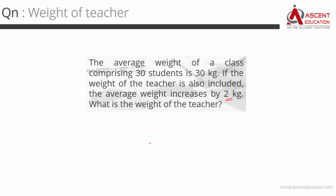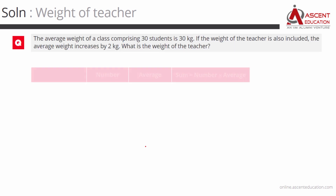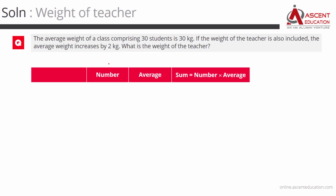This question can be solved by fitting into the standard framework. In the standard framework, the first column is number, the second is average, and the third is sum, which is number multiplied by average.